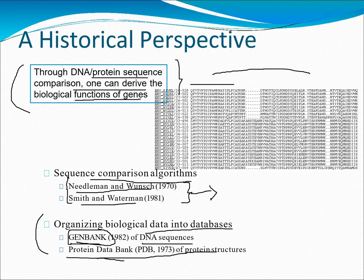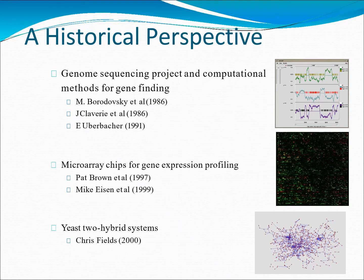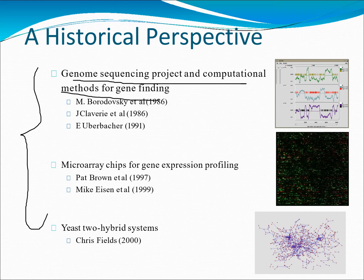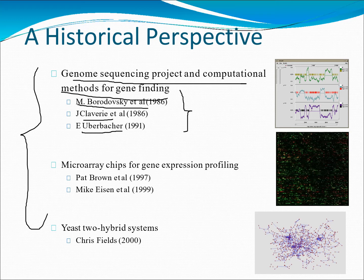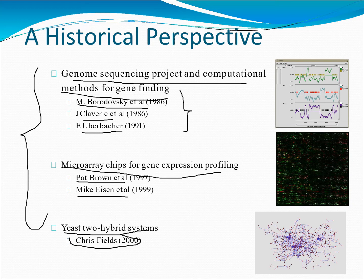Coming to another historical perspective: genome sequencing projects and computational methods for gene finding began with Borodovsky, Clary, and Uberbacher. These are historical research points that may appear in exams. Also, microchips for gene expression profiling were discovered by Pat Brown, and yeast two-hybrid systems were discovered by Chris Fields in 2000. These are historical perspectives very relevant to computational biology.